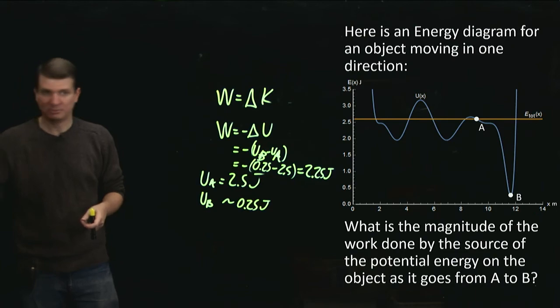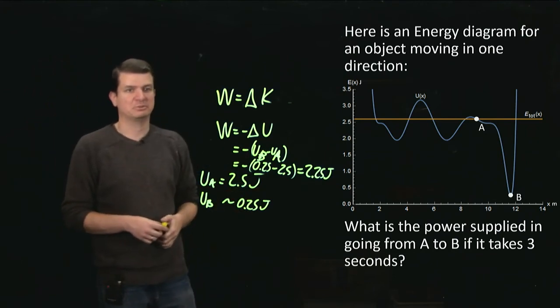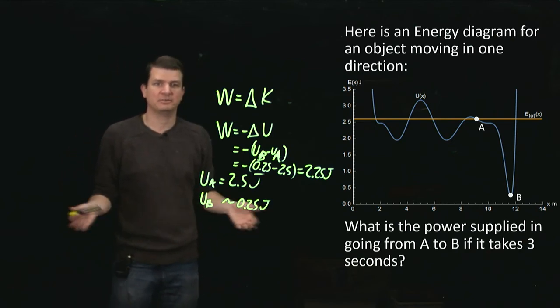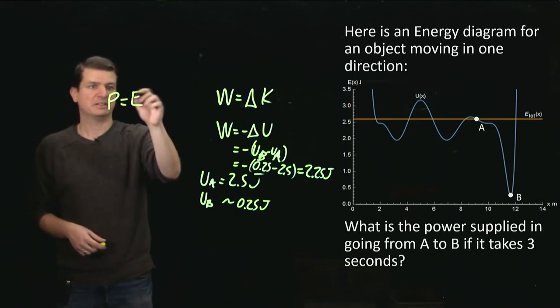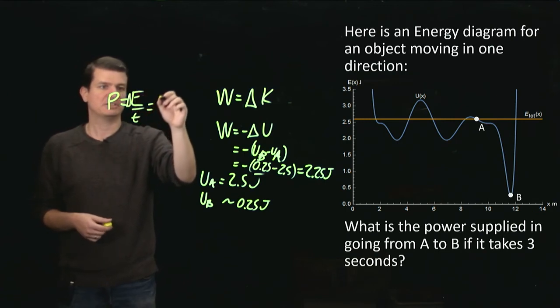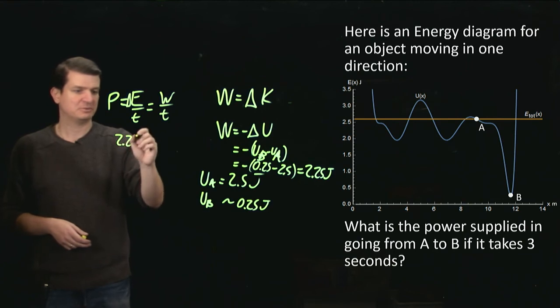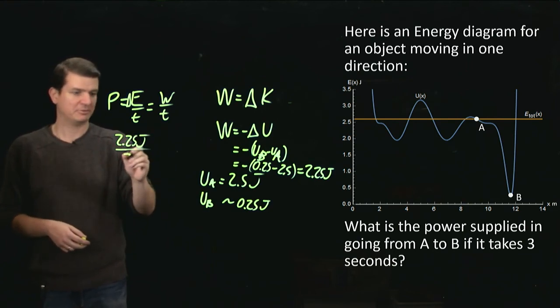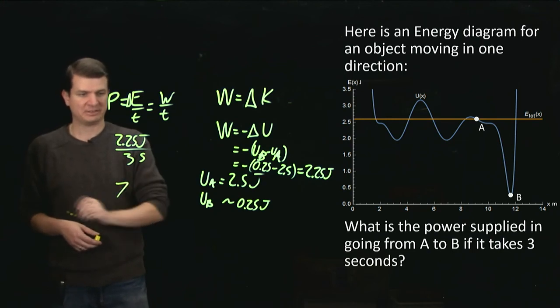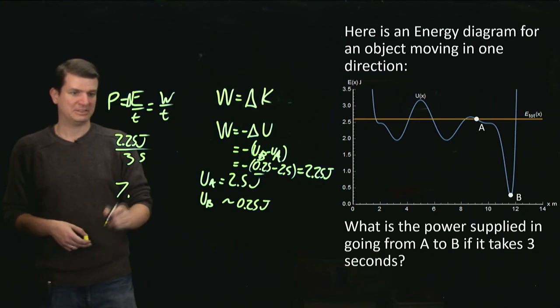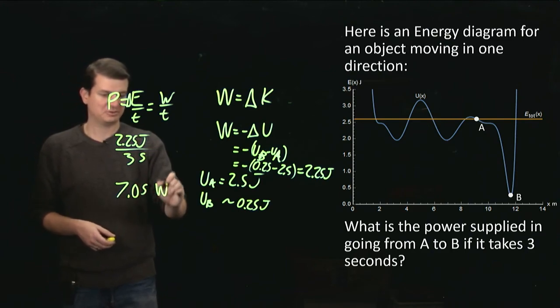So then we need one more part to this question which is asking us about the power that is supplied by this source of the potential energy as we move from A to B if that happens in three seconds. And for that part we just need to know that power is simply the change in energy over time which is the work over time. So we just take this 2.25 joules and we divide it by the time, three seconds. So we divide that. That's going to be 7.5 watts. Seven times three is 2.1. That leaves us with 0.15. So 0.75. And then joule per second is a watt.